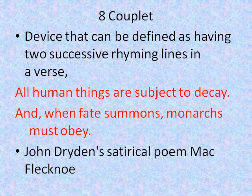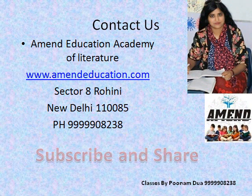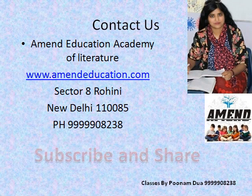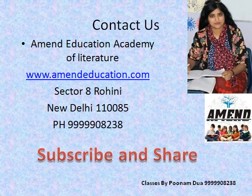A couplet is a literary device defined as having two successive rhyming lines in a verse. For example, 'All human things are subject to decay, and when fate summons, monarchs must obey.' This famous line has been taken from John Dryden's satirical poem 'Mac Flecknoe.' I hope this video has been helpful. Please subscribe to our channel to gain more knowledge about English literature. Thanks a lot for watching — best of luck for your exams.